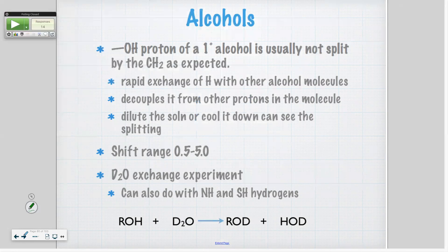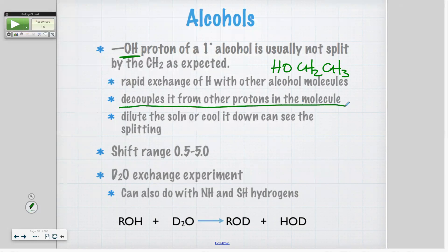Alcohol. Alcohols have OHs — that's a proton. You can see that proton in the NMR. Remember the range was like one to four. The OH of a primary alcohol is usually not split by the CH2. For example, if you have ethanol, this hydrogen has neighbors, but that hydrogen is available for hydrogen bonding. What will happen is it will exchange with hydrogen of other molecules, which decouples it from the other protons in the molecule. The OH typically does not split.